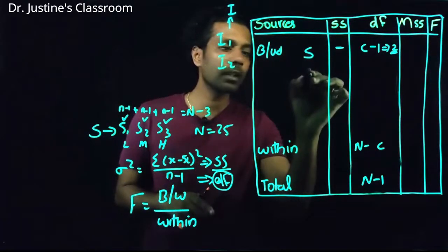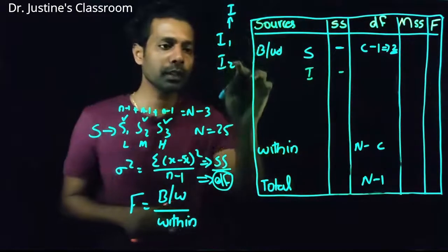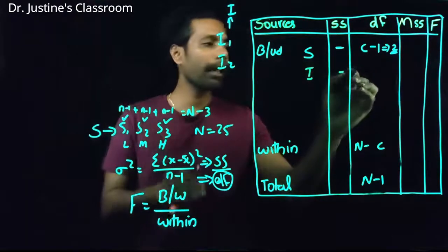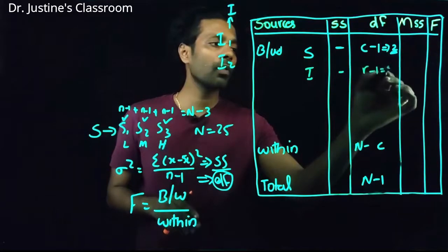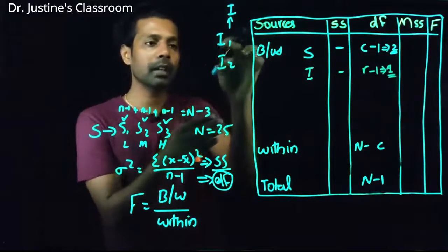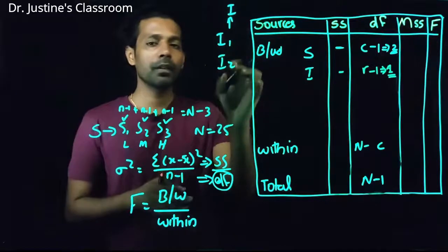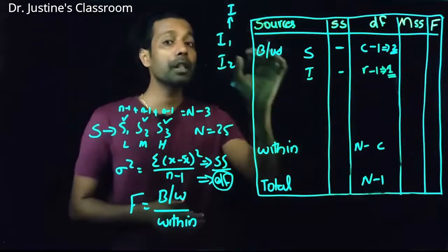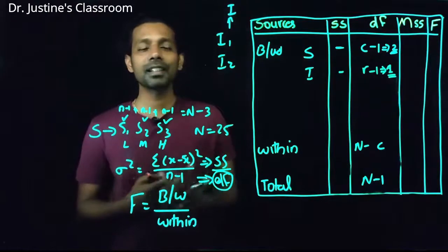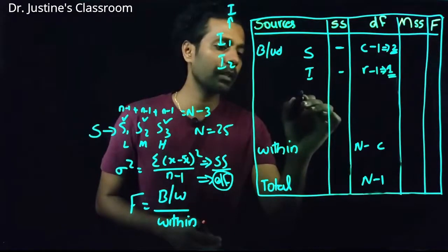For degree of freedom of illumination, I have two groups, so using 'R' for rows: df = R minus 1 = 2 minus 1 = 1. For sound, df = C minus 1 = 3 minus 1 = 2. If you had three illumination levels, df would be 3 minus 1 = 2. If five levels in a variable, df = 5 minus 1 = 4.